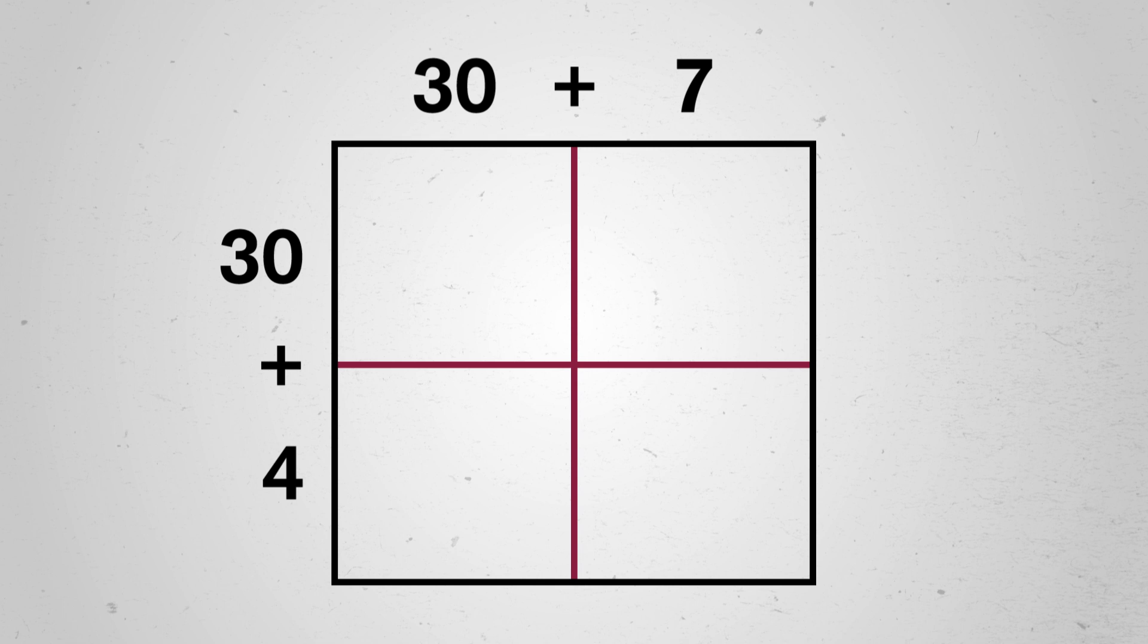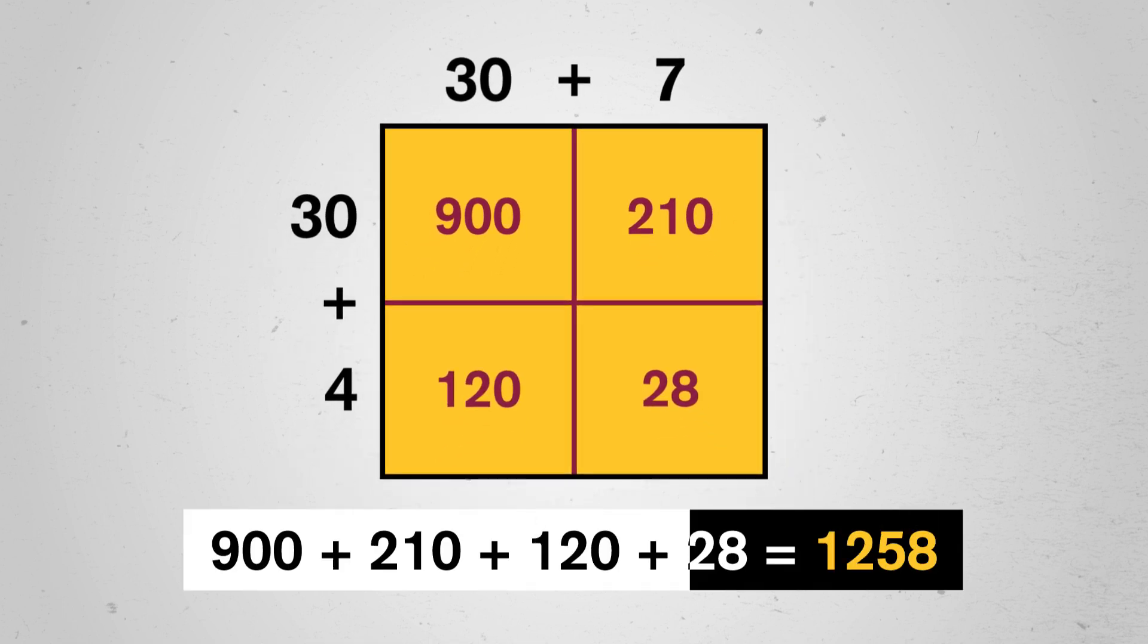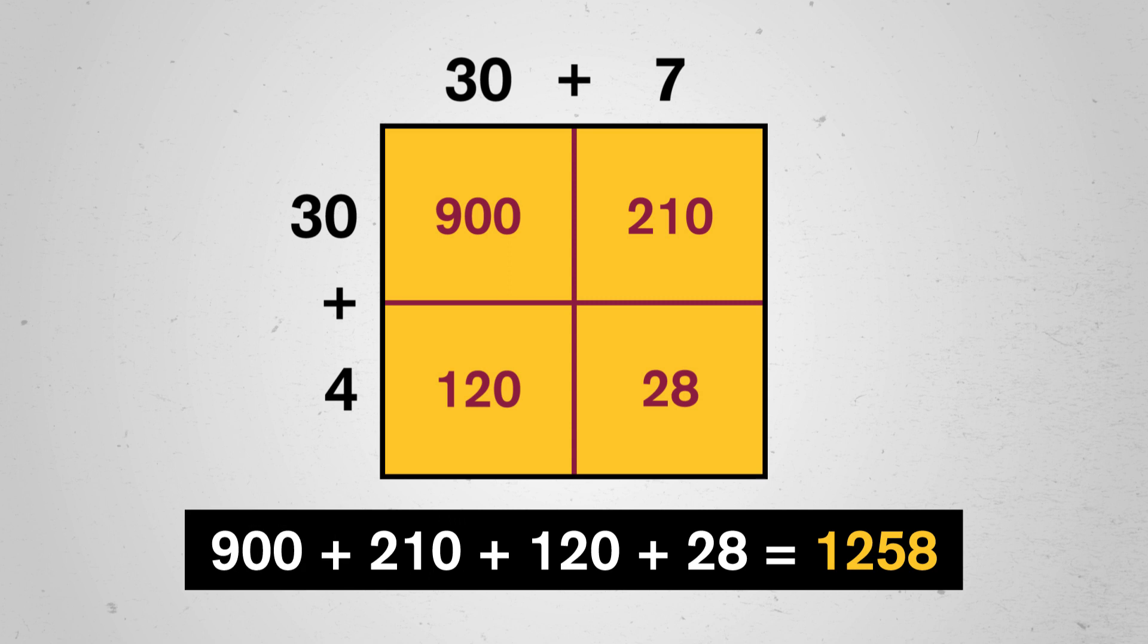But we've come up with ways to get by. For instance, we can think of this multiplication problem as finding the area of a rectangle. And then we write 37 as 30 plus 7, and 34 as 30 plus 4. And these smaller rectangles are much friendlier. 30 times 30 is 900, 30 times 7 is 210, 30 times 4 is 120, and 7 times 4 is 28. We can add all these together and get 1,258, exactly as if we'd drawn 37 groups of 34 dots and counted them.